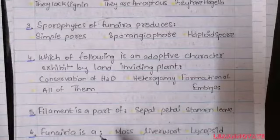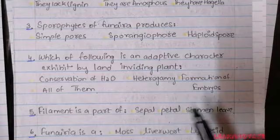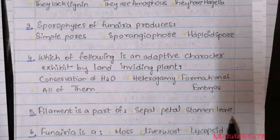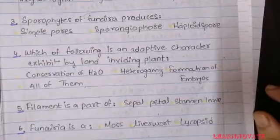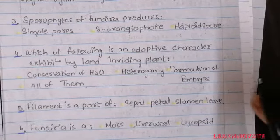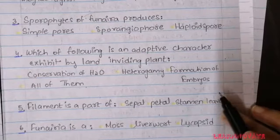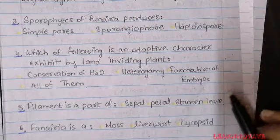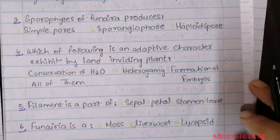Question 5: Filament is a part of — A. Sepal, B. Petal, C. Stamen, D. Leaf. Which part of a flower contains a filament? The answer is C — stamen has a filament as part of it, while sepals, petals, and leaves are separate parts of a complete flower. You must learn all the important structures of Kingdom Plantae.